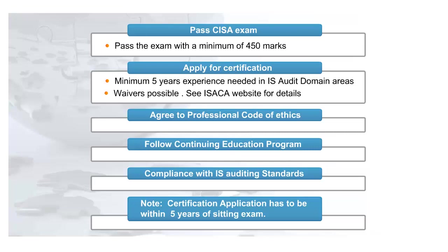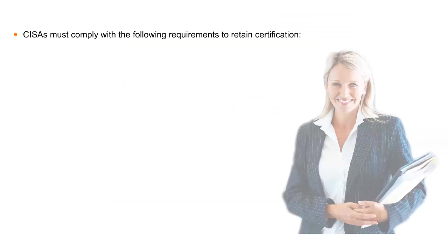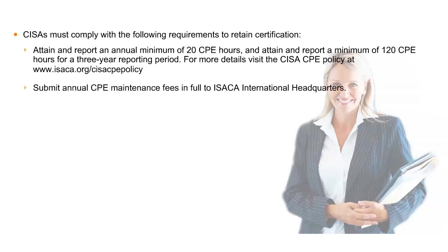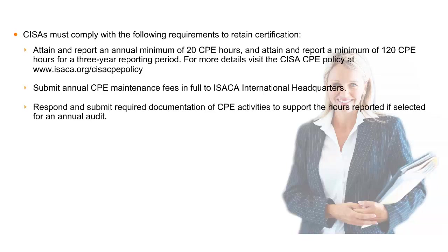Once certified and holding the CISA designation, one should abide with the requirements in order to maintain the certification. These requirements include: attaining and reporting an annual minimum of 20 CPE hours, and attaining and reporting a minimum of 120 CPE hours for a three-year reporting period. For more information, visit the CISA CPE policy on the ISACA website. Submit annual CPE maintenance fees in full to ISACA International Headquarters. Respond and submit required documentation of CPE activities to support hours reported if selected for an annual audit. Comply with the ISACA Code of Professional Ethics.